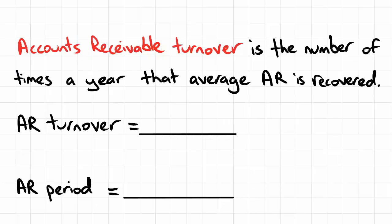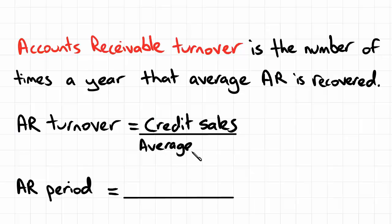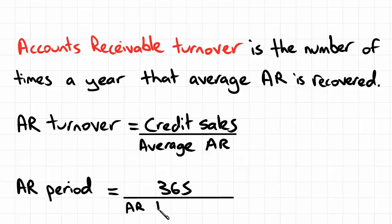We can apply similar logic with accounts receivable. The accounts receivable turnover is the number of times a year that we recover the average amount of accounts receivable. To calculate it, we take total credit sales over the year — which represents the full amount of accounts receivable accumulated — and divide by the average accounts receivable. Then, to get the accounts receivable period, we take 365 divided by the turnover, giving us on average how many days it took to recover the average accounts receivable.